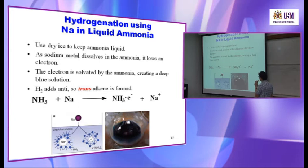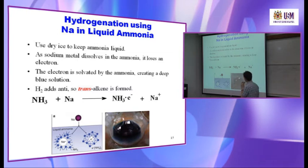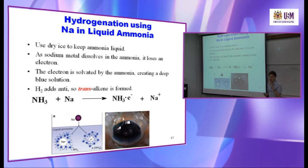The important fact to know is: when you dissolve sodium in ammonia, it releases an electron. This electron then initiates a radical reaction. The hydrogen is added in the anti-fashion, so a trans-alkene is yielded. This is an important difference between the two hydrogenation reactions: Lindlar catalyst yields a cis-alkene, while sodium dissolved in ammonia yields a trans-alkene.